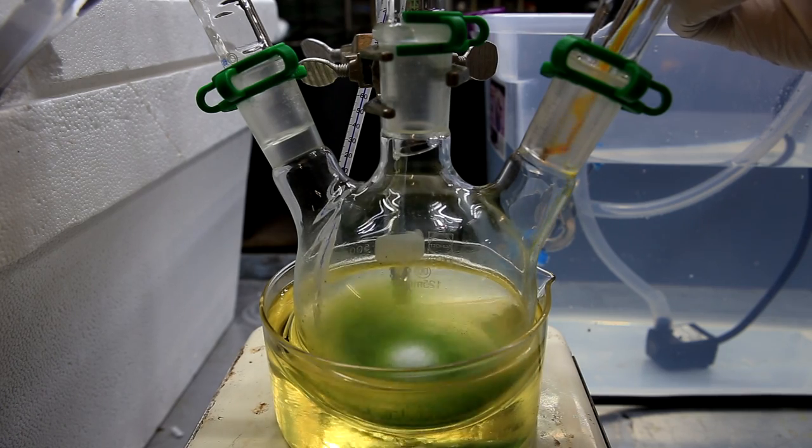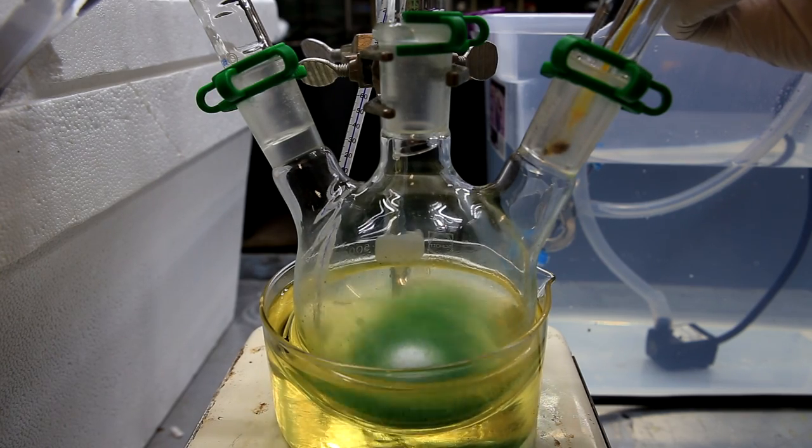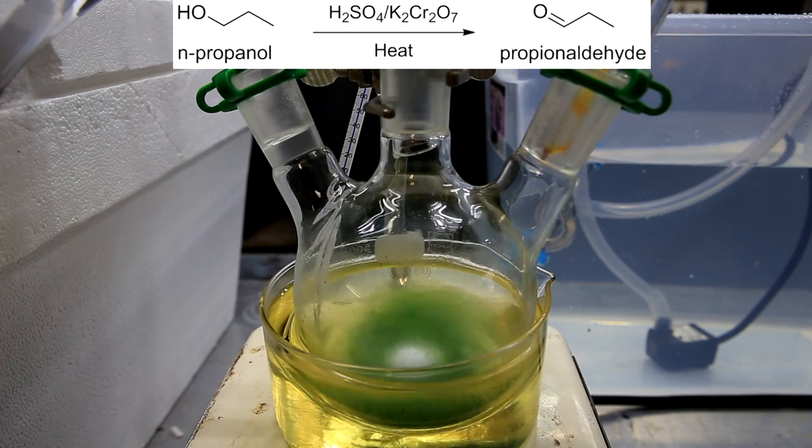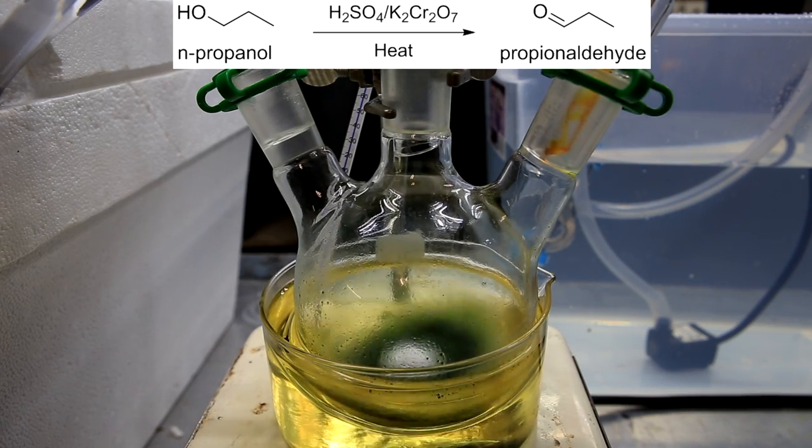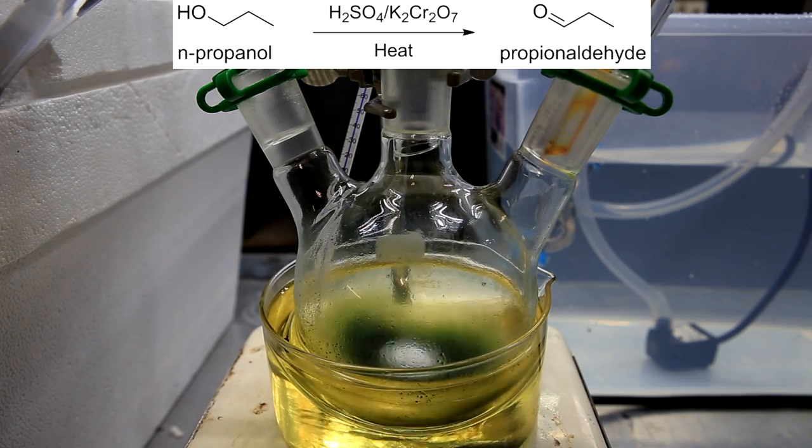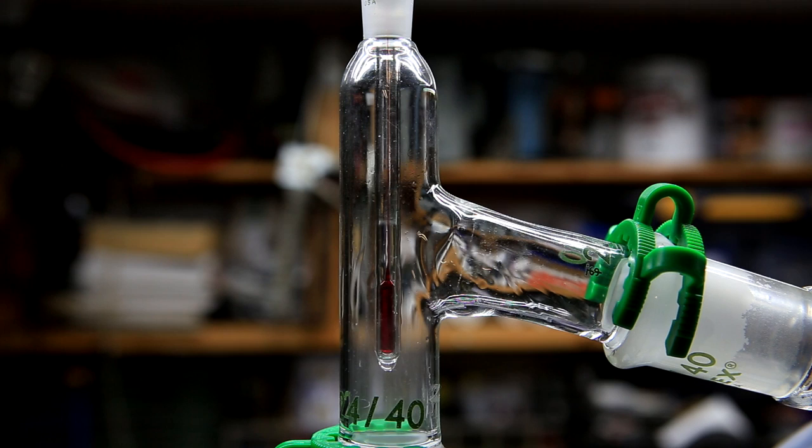To keep up a vigorous boiling of the reaction mixture, it's important to add the chromic acid solution slowly. The reaction occurring is shown above, where the n-propanol, which is an alcohol, is oxidized by the sulfuric acid-potassium dichromate mixture to the corresponding aldehyde.